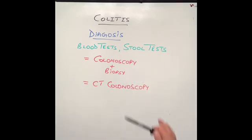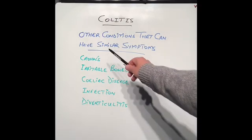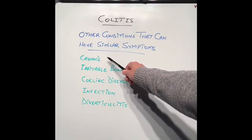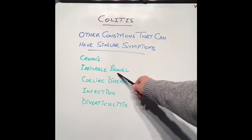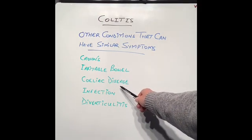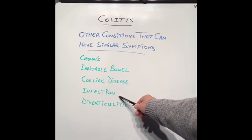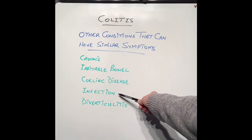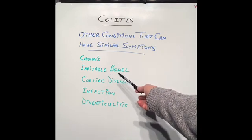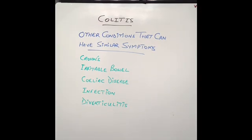These are the main two tests for diagnosis of ulcerative colitis. Other conditions with similar symptoms include Crohn's disease, irritable bowel syndrome which I'll discuss in upcoming videos, celiac disease which is gluten allergy, bowel infections caused by different bacteria producing diarrhea, abdominal pain, blood and mucus in the motions, and a condition called diverticulitis which I will also cover in a future video.